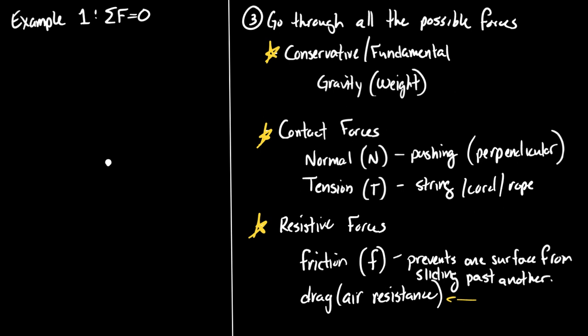Now I want to draw a free body diagram. There's only one object - the book - so I'm going to draw a dot to represent it. I'll draw arrows moving away from that dot to indicate each force. I'll go through my set of forces and ask which ones are acting on the object. Is there a fundamental force acting on it? The answer is always yes. You set the scale of your picture by drawing that first arrow - weight - downward. Every object will have weight.